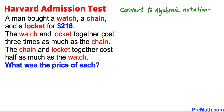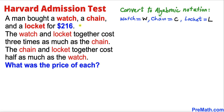The very first step is to convert this word problem into algebraic notation. Let me denote the watch as W, the chain as C, and the locket as L. Focusing on the first sentence — watch, chain, and locket cost 216 dollars — this can be written as W + C + L = 216.